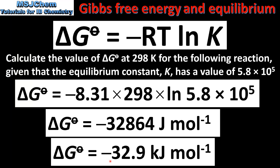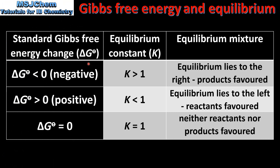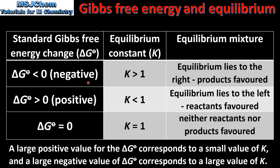The negative sign tells us that the reaction is spontaneous under standard conditions. If the standard Gibbs free energy change is negative, the equilibrium constant is greater than 1, meaning the position of equilibrium lies to the right favouring the products. If ΔG° is positive, K is less than 1, and the position of equilibrium lies to the left favouring the reactants. If ΔG° equals 0, K equals 1, and neither reactants nor products are favoured.